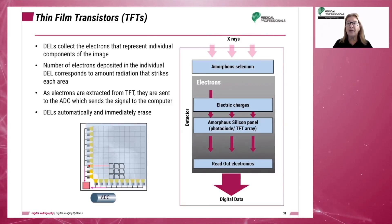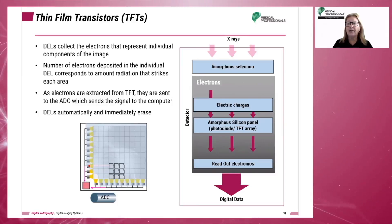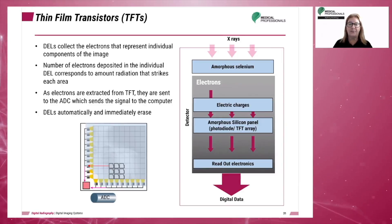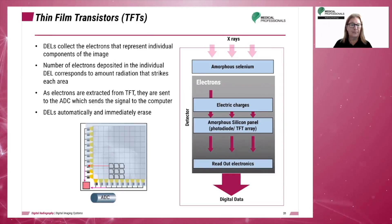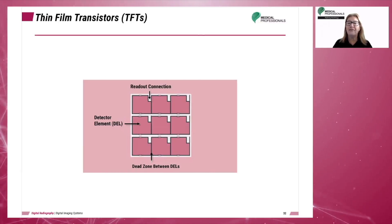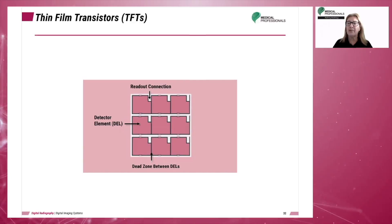As electrons are extracted from the TFTs, they are sent to the analog-to-digital converter, which sends the signal to the computer. The detector elements are then automatically and immediately erased. The size of the detector elements determines the spatial resolution of a flat panel detector — as the size of the detector elements increases, the spatial resolution will decrease.